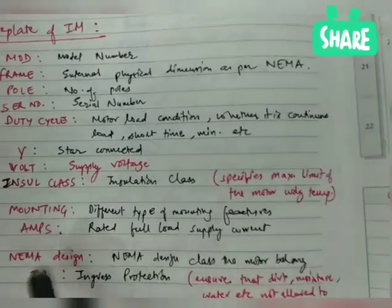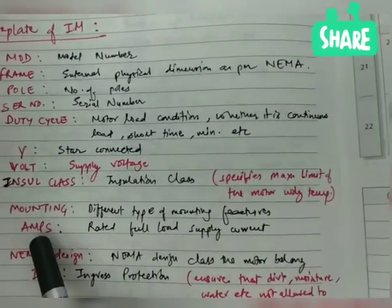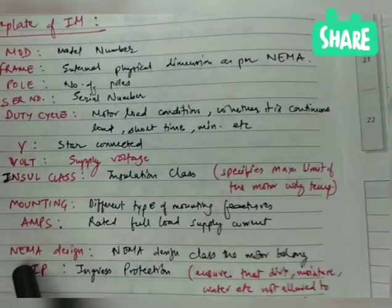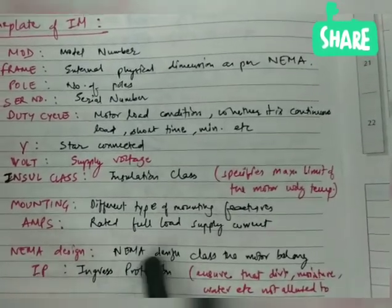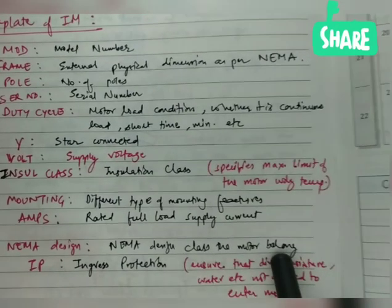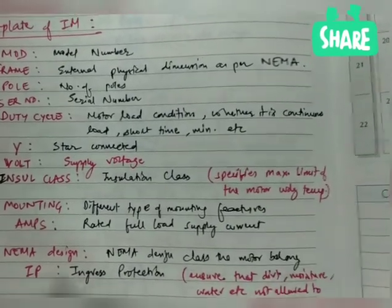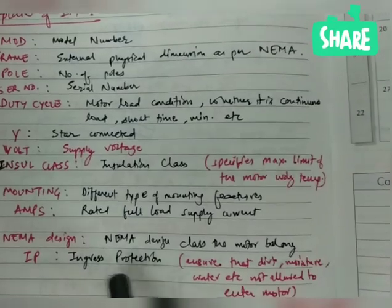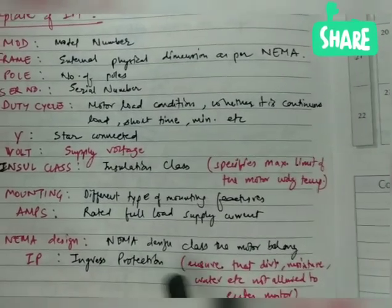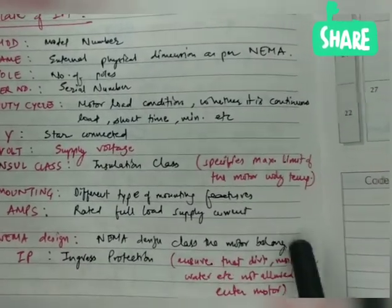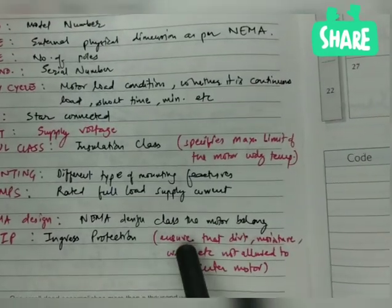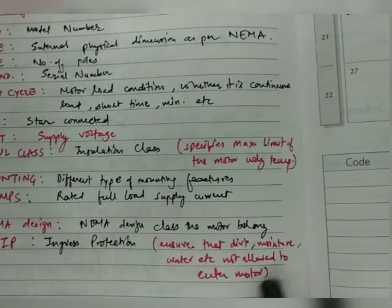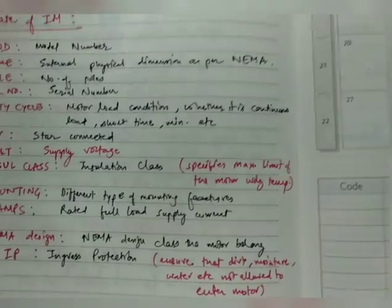Then mounting — the different types of mounting features. Then amps, which is the rated full load supply current. NEMA design class — which class the motor belongs to. Then comes IP, which is ingress protection. In short, ingress protection ensures that dirt, moisture, water, etc. are not allowed to enter the motor.